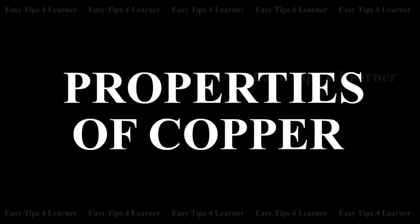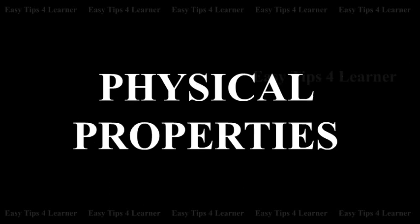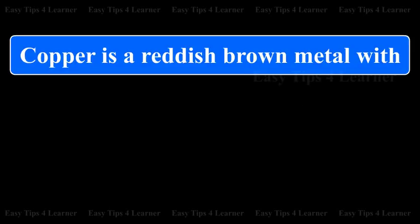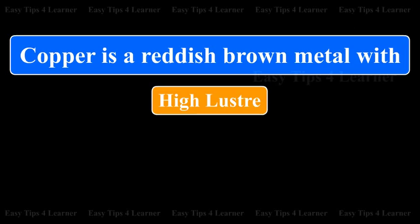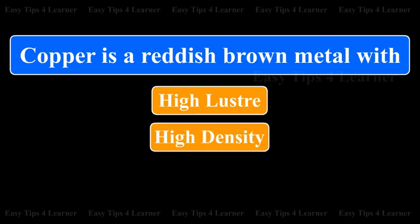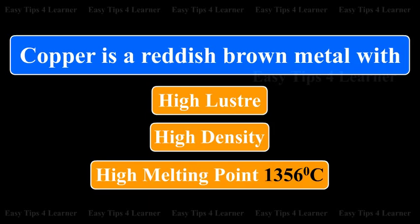Properties of copper. Physical properties: Copper is a reddish brown metal with high luster, high density, and high melting point, i.e., 1356 degrees Celsius.